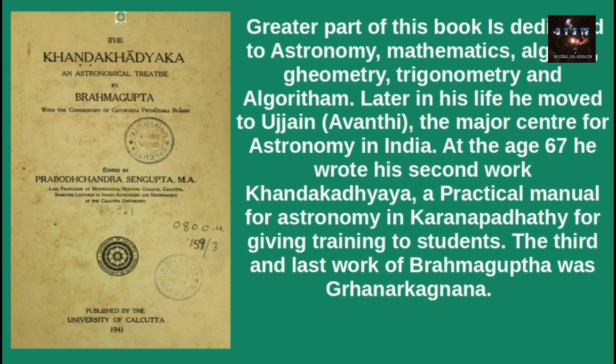At the age of 67, Brahmagupta wrote his second work called Khandakhadyaka, in the Karana tradition, for giving training to students. That was a textbook of astronomy. The third and last work of Brahmagupta was Grahanakarnajana.